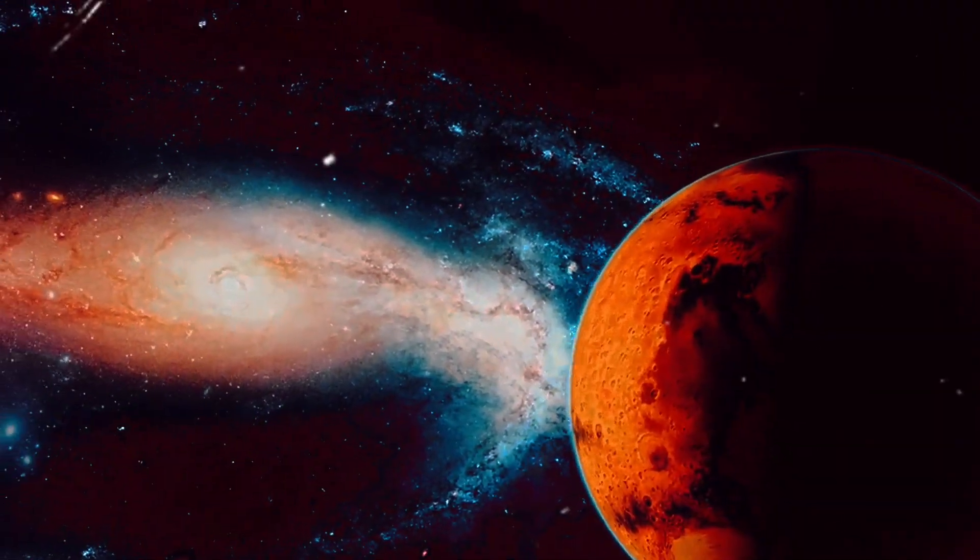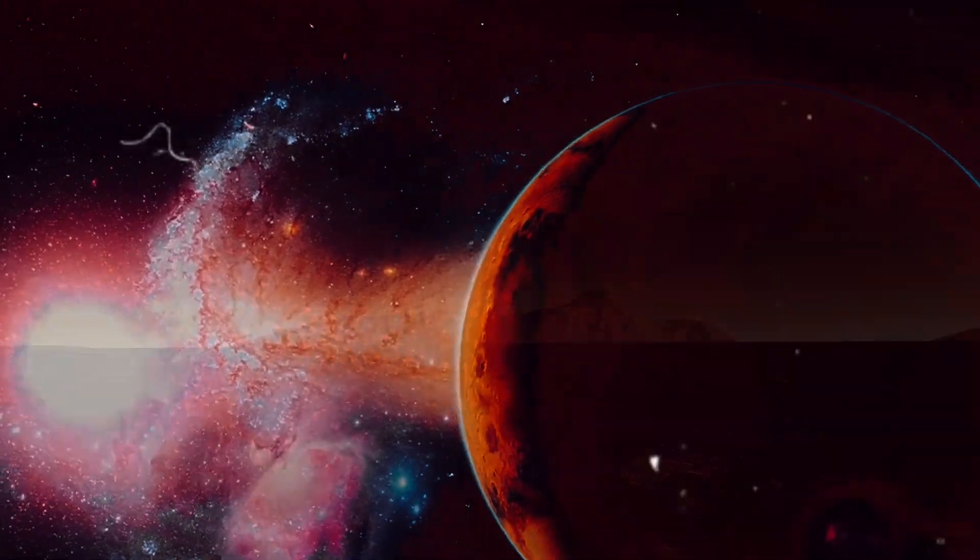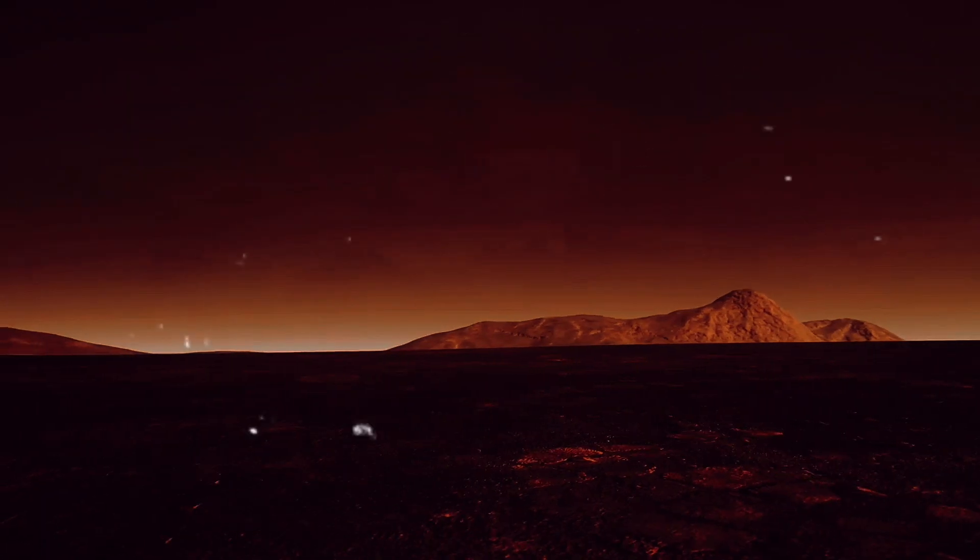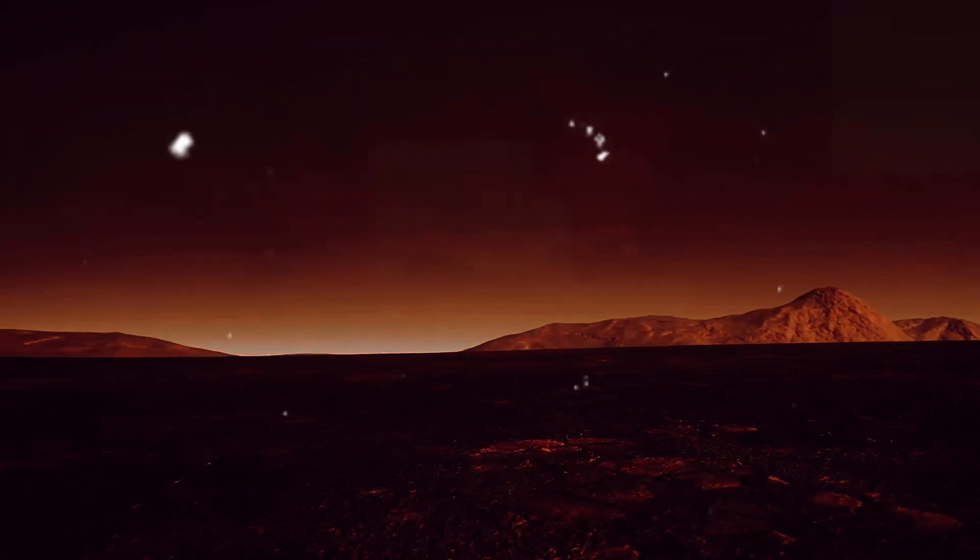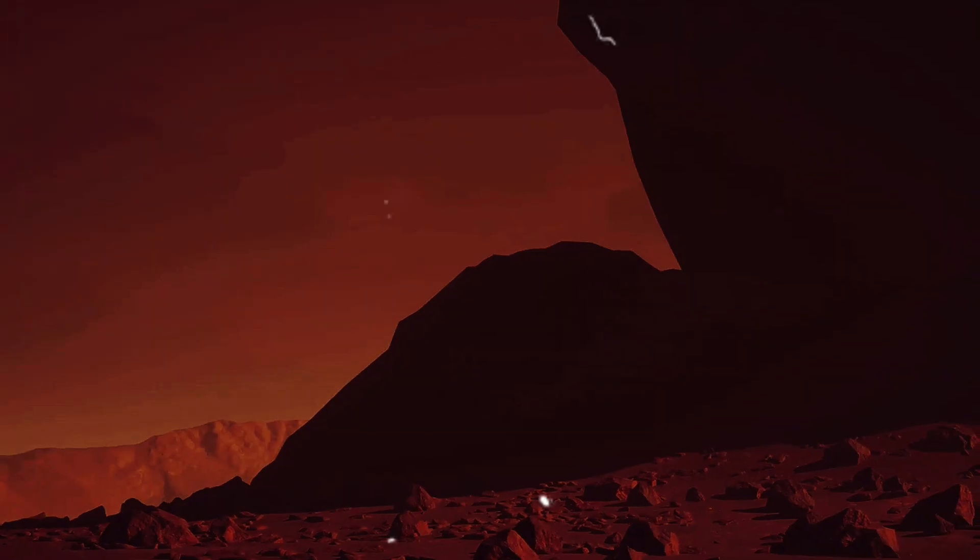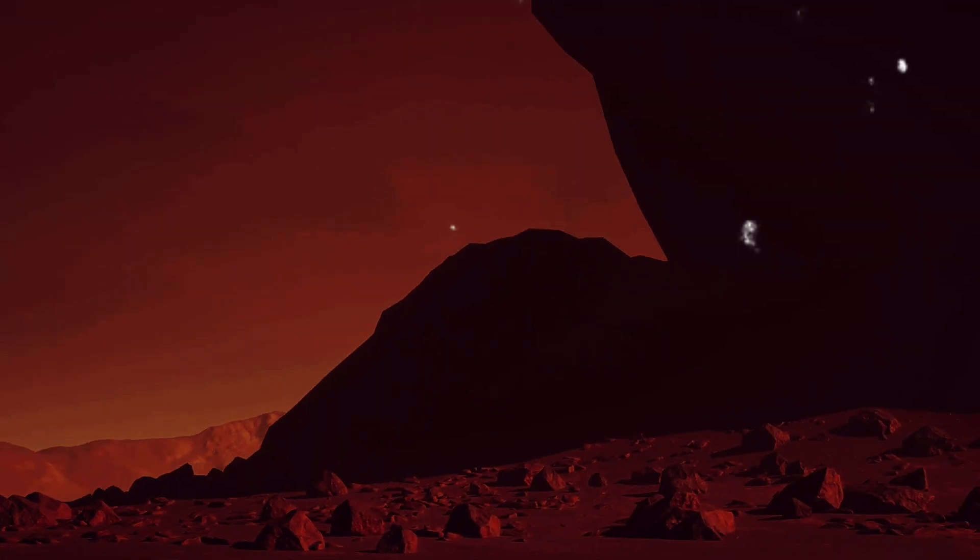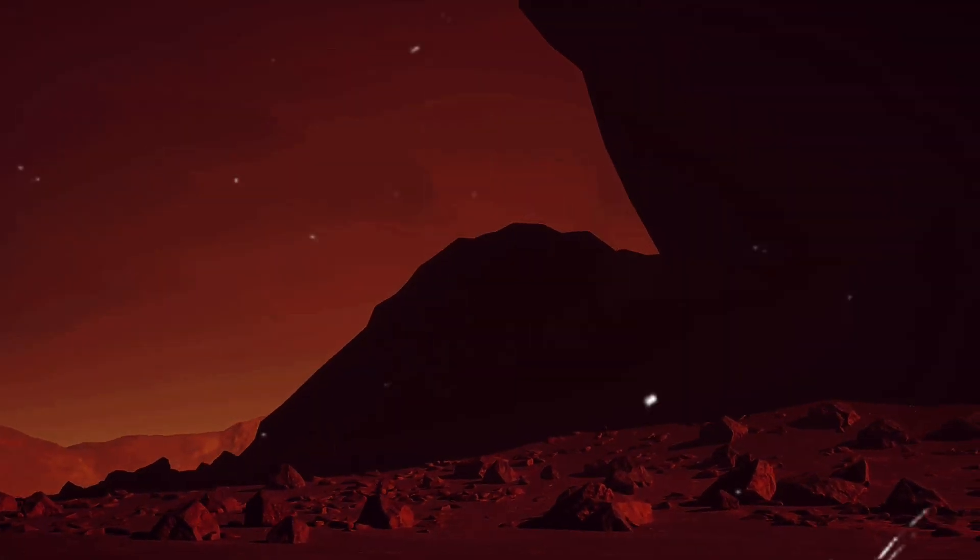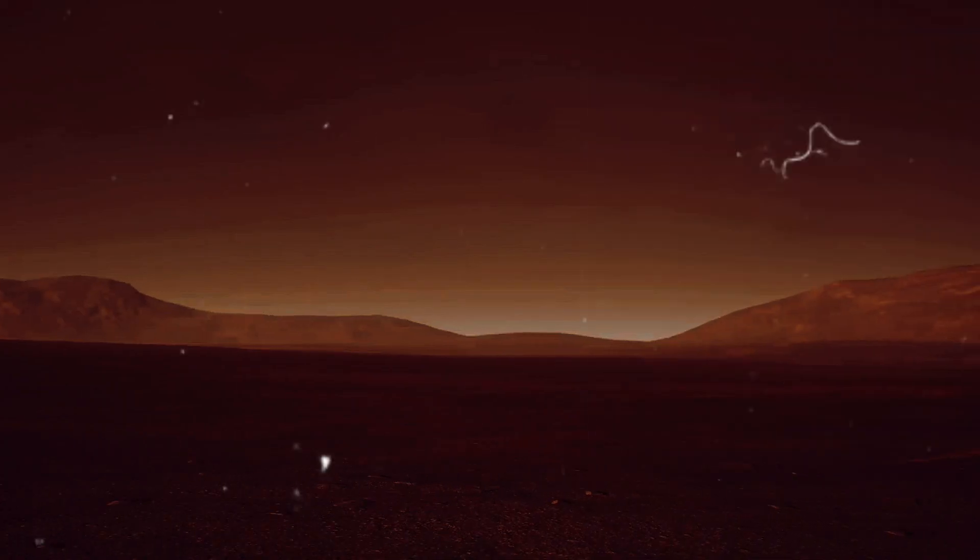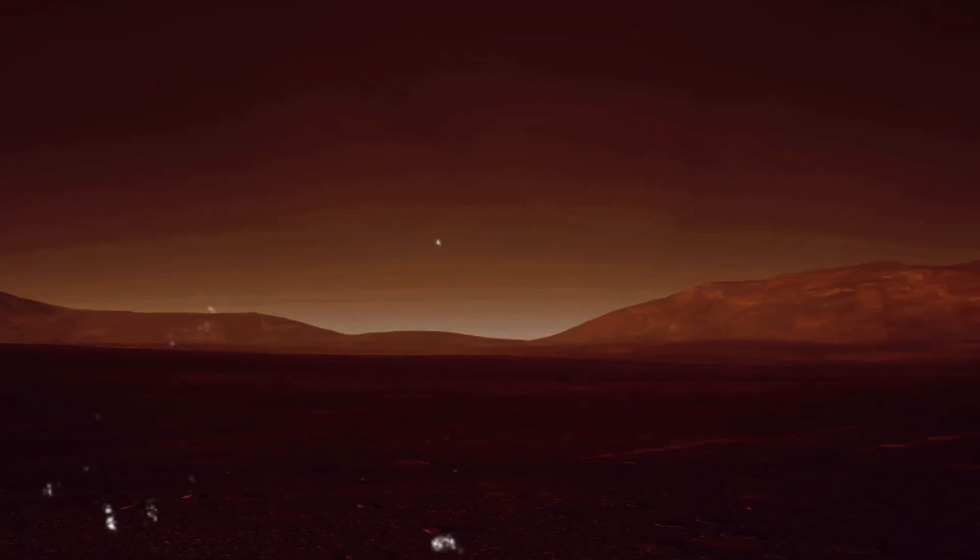But the climate is not the only thing that would change. Let's explore further. A year on Mars is almost twice as long as a year on Earth. How would this affect our calendar and our concept of time? Well, let's dive in and explore this. A Martian year is approximately 687 Earth days long. That's right, almost double our typical 365-day year. Imagine having to wait twice as long for your birthday or for Christmas. Our calendar would need a complete overhaul to accommodate this longer year, with perhaps more months or longer months.